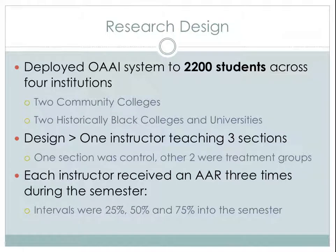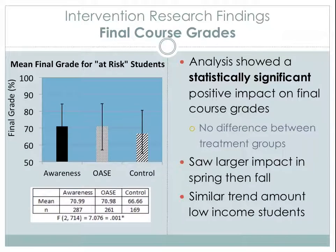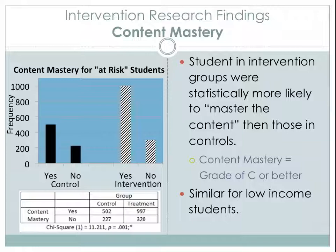We rolled this out to 2,200 students across two community colleges and two historically black colleges and universities. In most cases, one instructor taught three sections of the same course — one section acted as a control group receiving no interventions, and the other two sections received one of the two interventions we were researching. We were pleasantly surprised to find statistically significant impact on final course completion rates, which in a very early prototype kind of process we weren't quite expecting. This leads us to believe that as this technology matures and we create a library of open models that people are contributing to and improving, we can get even better results. We also found that students who received intervention were more likely to master the content — defined by Bill and Melinda Gates Foundation as a C grade or higher — than those in our control groups.